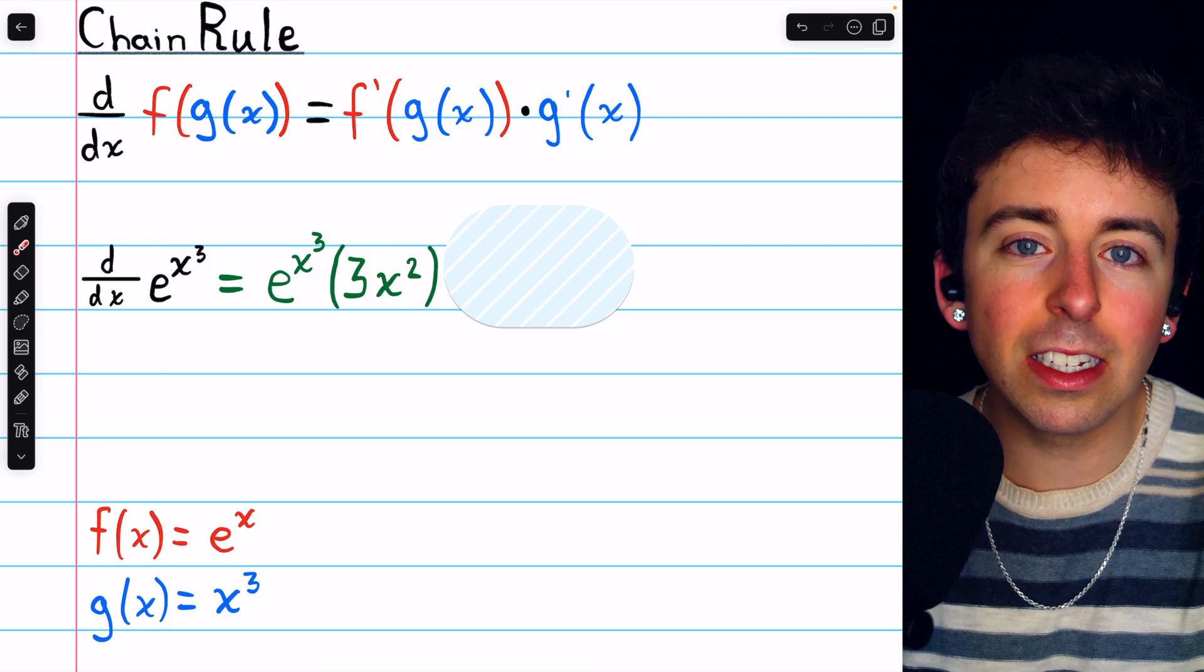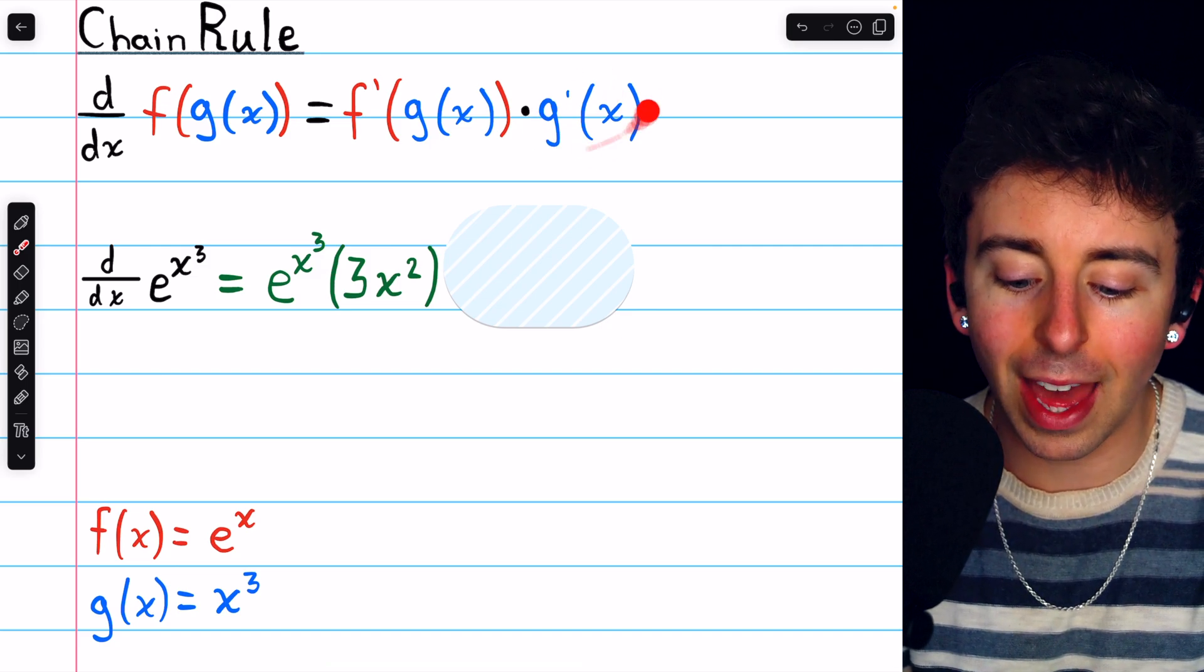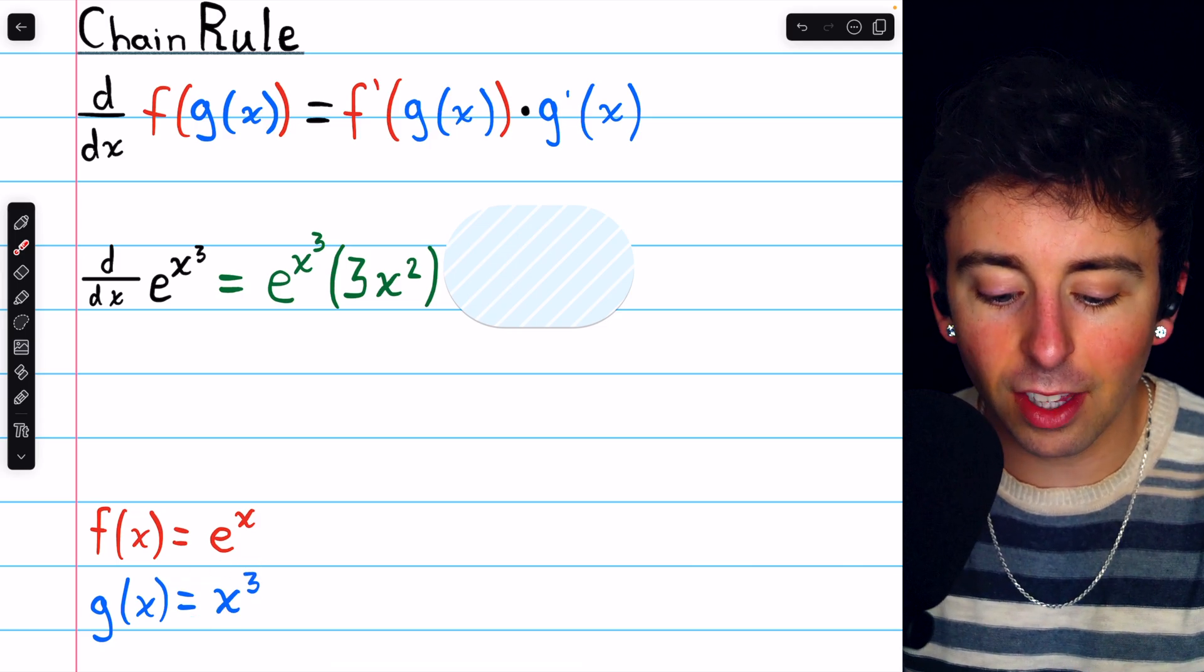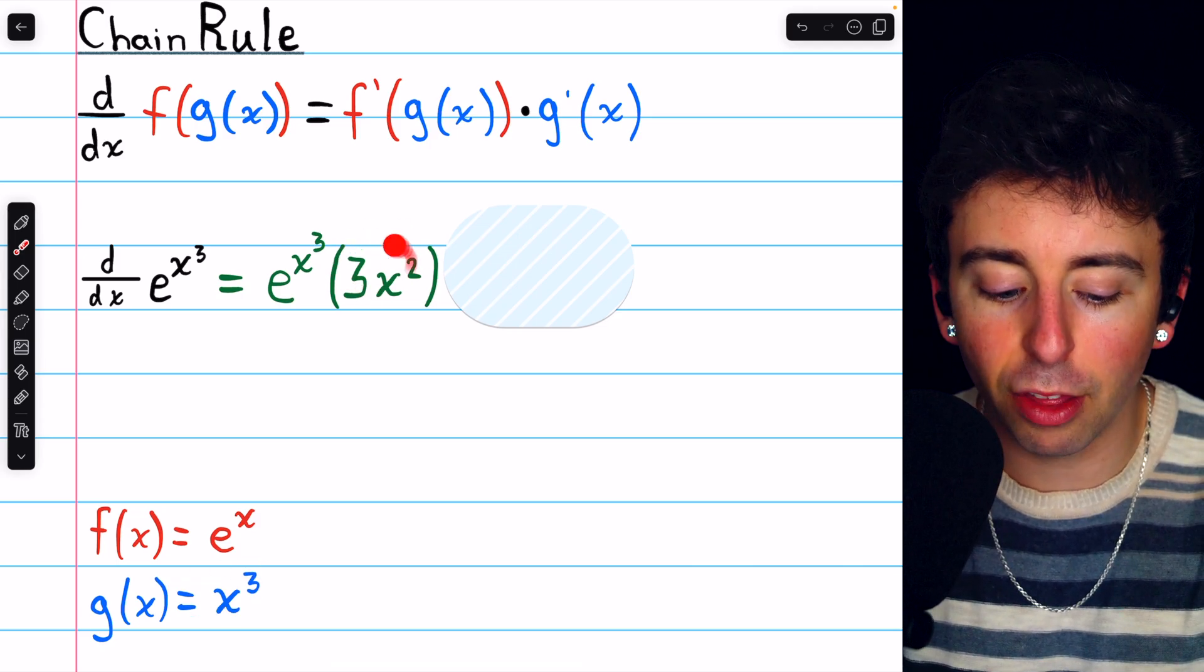But then by the chain rule, we need to multiply by the derivative of that thing. We need to multiply by g prime. g is x cubed, so we multiply by 3x squared.